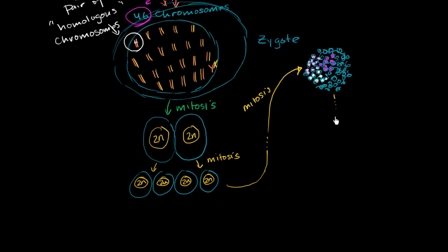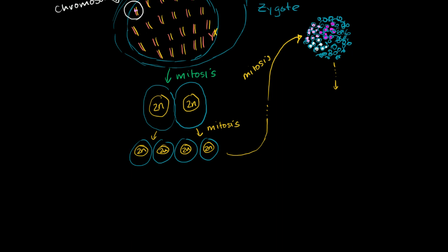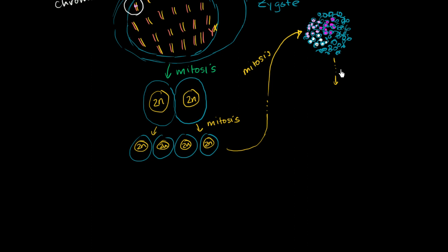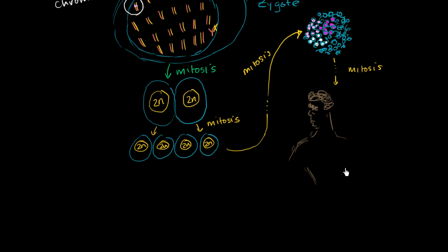With a lot more mitosis, you're eventually going to have a human being. So this is more mitosis going on, and now let me attempt to draw a human being. That doesn't really look like me, but I have a lot of hair and big eyebrows — anyway, you get the point.